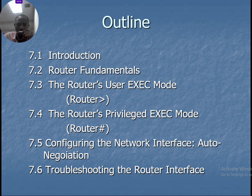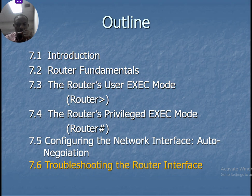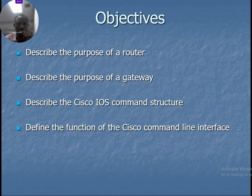In 7.4 we're going to look at the router privileged exec modes. In 7.5 we're going to look at configuring the network interface — the auto-negotiation — how this is dynamically carried out, how the network auto-negotiates via routers for any packet coming in or going out. After that we look at troubleshooting the router interface.